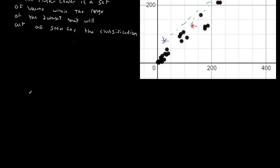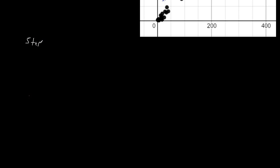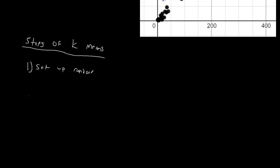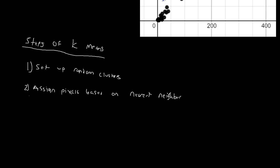We can consider k-means as a series of steps — we'll go through these in more detail in the next video. Step one: set up random clusters. Step two: assign pixels based on nearest neighbor — and that's what we kind of went through just a second ago.